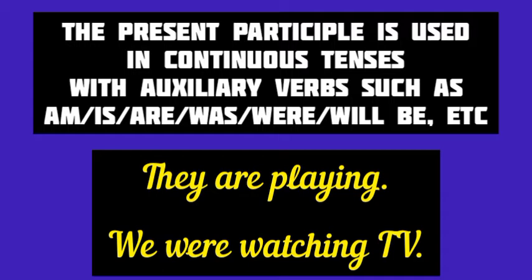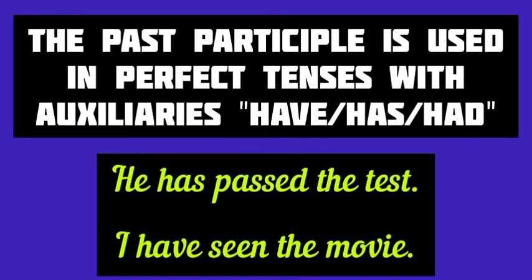The present participle or the fourth form of the verb is used in the continuous tense. In the same way, the past participle or the third form of the verb is used in the perfect tense with the auxiliary verbs have or had. For example, it is the past participle used in the present perfect tense. I have seen the movie — here, seen is the past participle of the verb see, used in the present perfect tense.